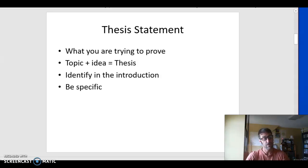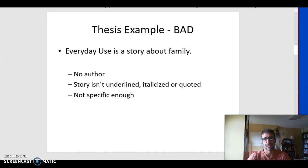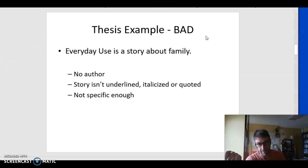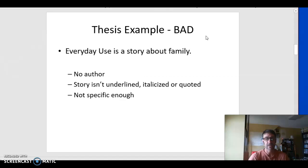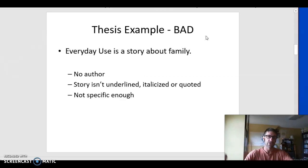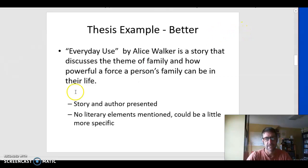Let's go through a few different examples of thesis statements. This one is labeled the very specific grade of bad: 'Everyday Use is a story about family.' We have a topic — Everyday Use — and we have an idea. But we're missing a few big things. Who's the author? The story isn't underlined, italicized, or quoted — I always put quotes around short stories. And it's really not specific enough. What is the story trying to say about family? Family is a big word. What does the author mean by family? And which literary elements does the author use to express this theme idea?